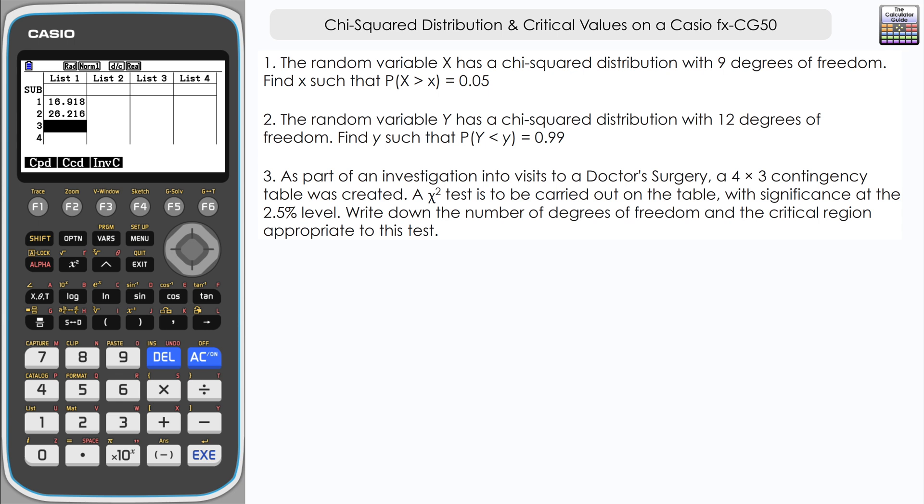So let's start with the degrees of freedom. Well, we've got a 4 by 3 contingency table. The way that we would work that out is to subtract one from the two values before we multiply them together. So 4 minus 1 multiplied by 3 minus 1, so that's 3 multiplied by 2, 6 degrees of freedom for this test.